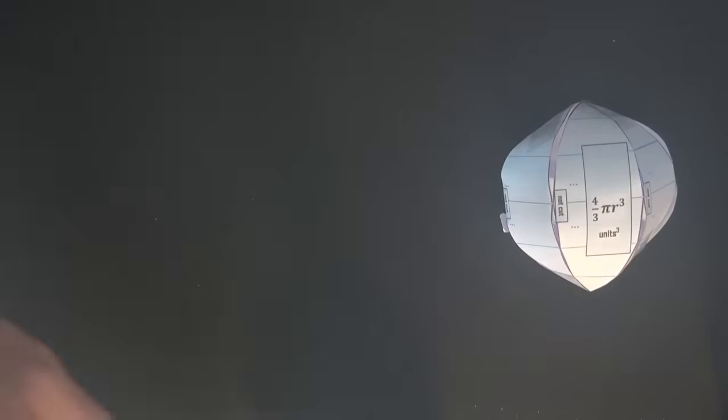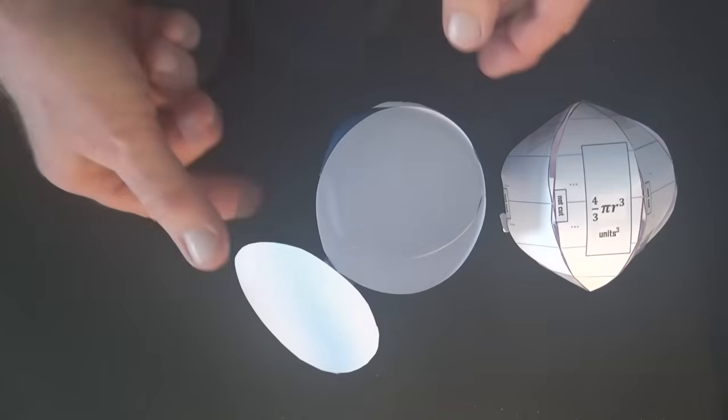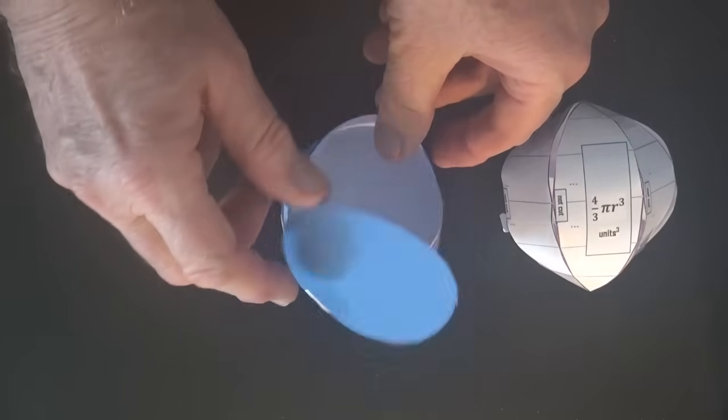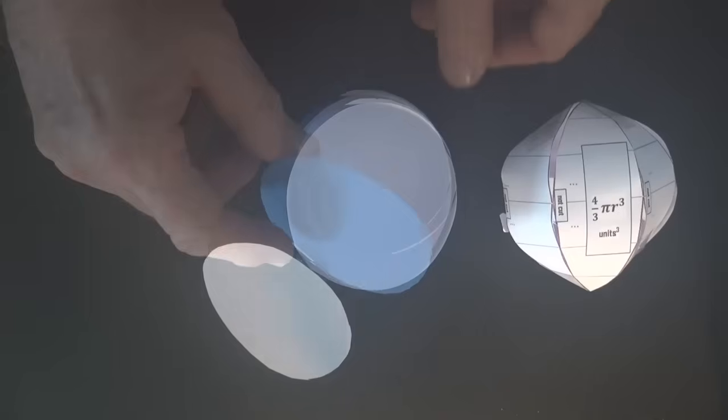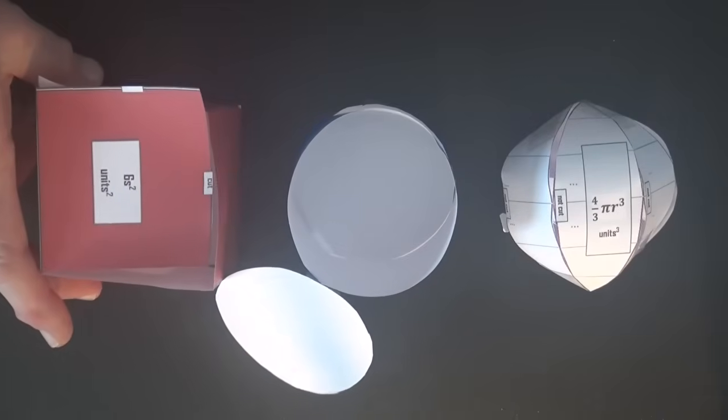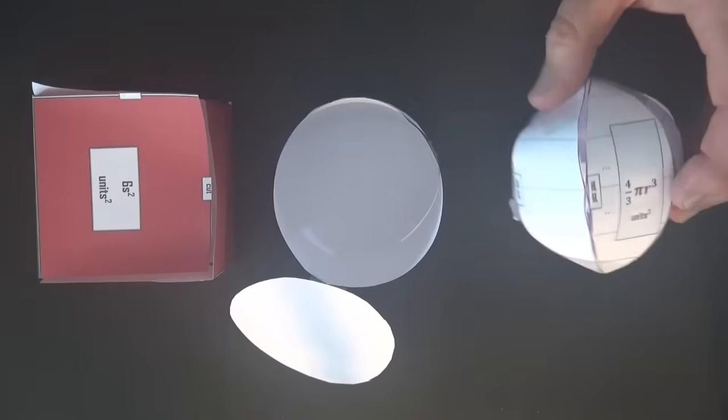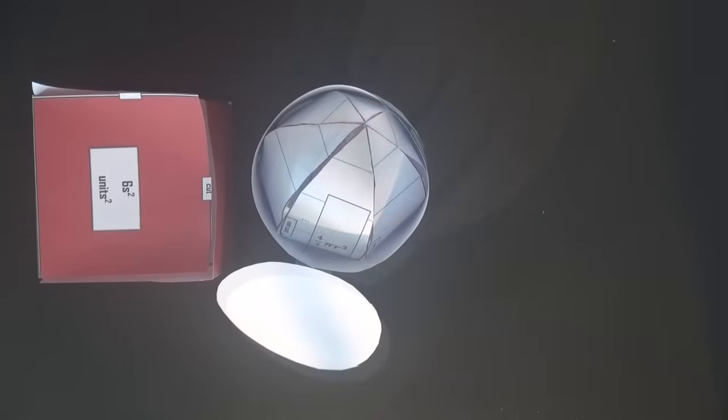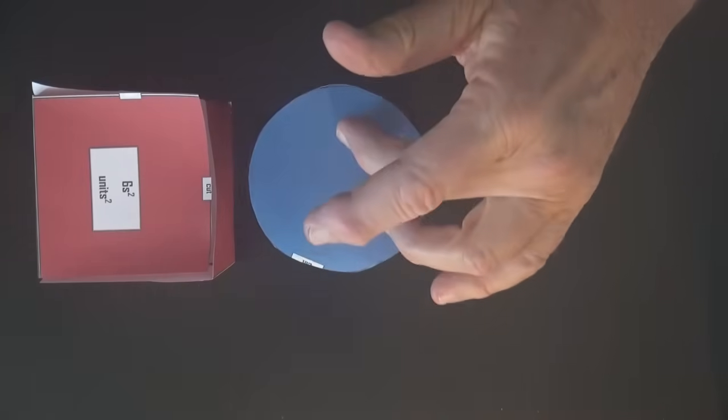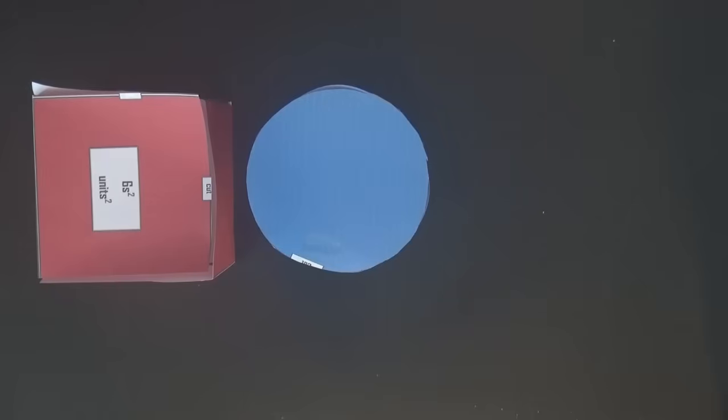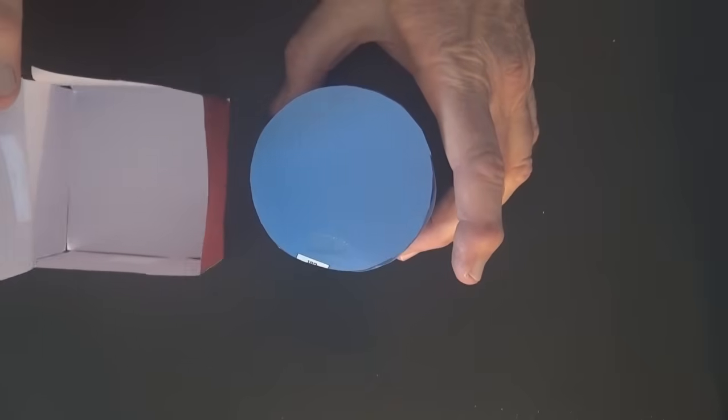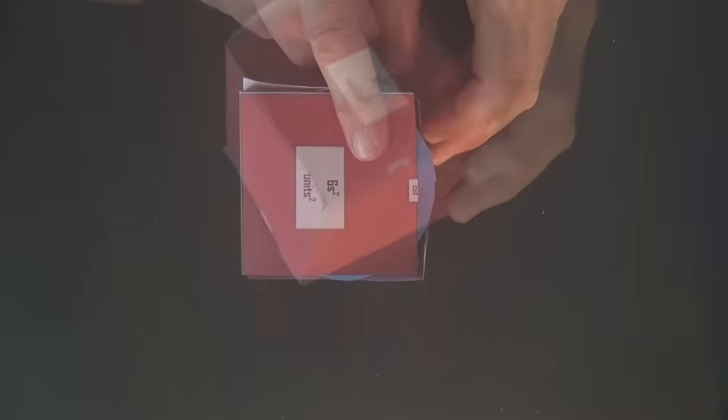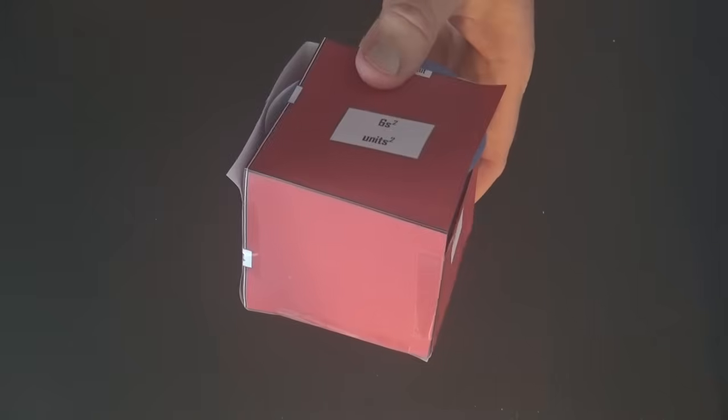When we put the model together it looks like this: sphere and then the cylinder which is a closed cylinder and then the cube. And we take the sphere and put it inside the cylinder. And then the cylinder inscribes inside the cube. And there it is, our model of the three inscribed solids.